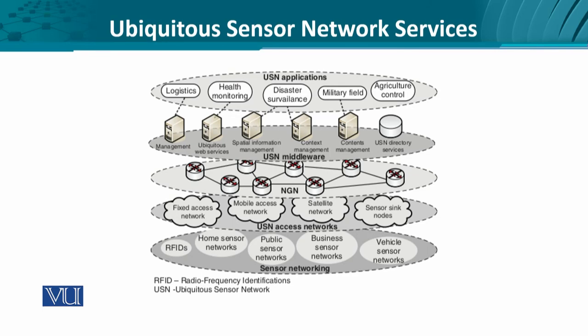Looking at the overall architecture for provisioning USN services: the lowest layer is the physical sensor network layer. Here we have different kinds of sensors like RFID — a passive tag that responds to a reader — used for inventory tracking, management, and supply chain applications. We also have vehicular ad hoc networks with mounted sensors, known as vehicle sensor networks or VANETs.